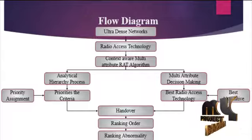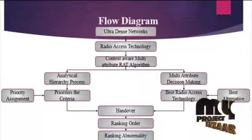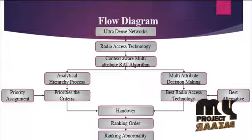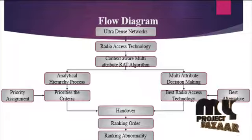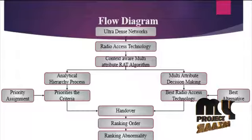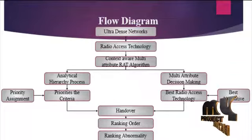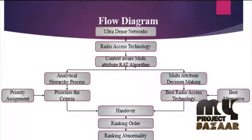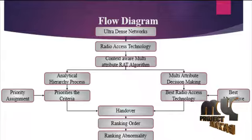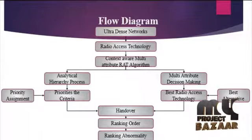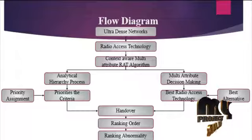In Ultradense Network, radio access technology is employed integrated with the Context-Aware concept, acting as a Context-Aware multi-attribute radio access technology algorithm. The algorithm is subdivided into two processes: analytical hierarchy process and multi-attribute decision-making. The Context-Aware multi-attribute radio access technology is obtained based on priority, which is used for the handover process to determine the weight of the radio access technology. The Context-Aware multi-attribute decision-making process is also used for the handover process, and handover is minimized due to the Context-Aware multi-attribute radio access technology mechanism.